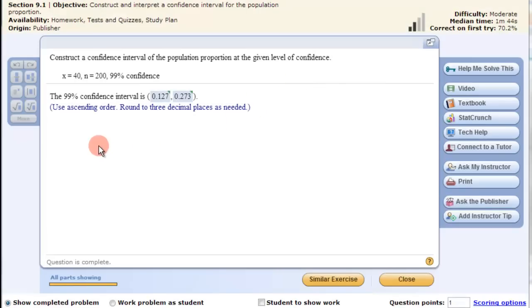In this video we're going to look at using StatCrunch to construct a confidence interval of a population proportion at a given level of confidence. So this is our 99% confidence interval for this information.